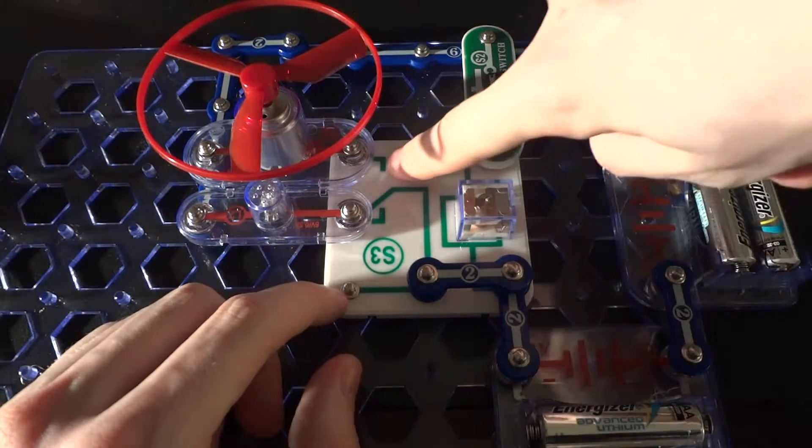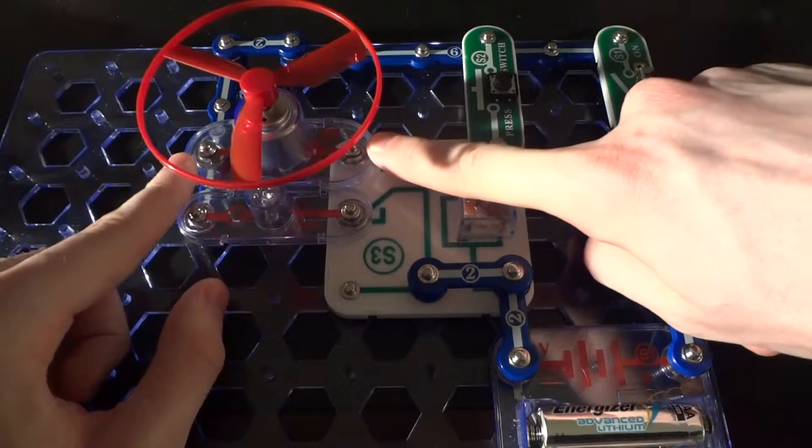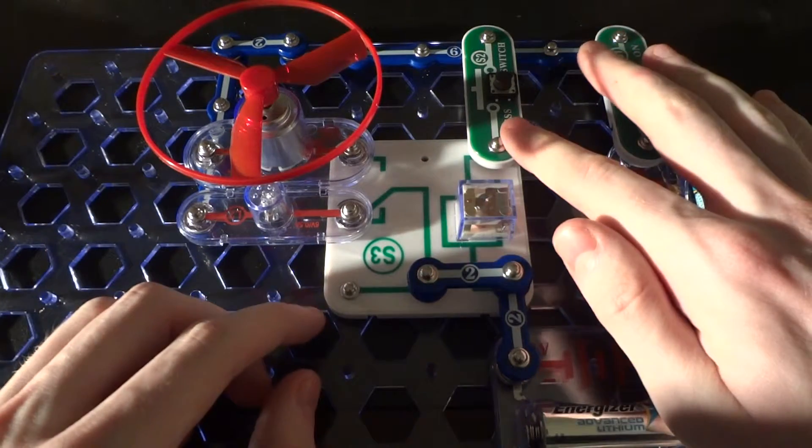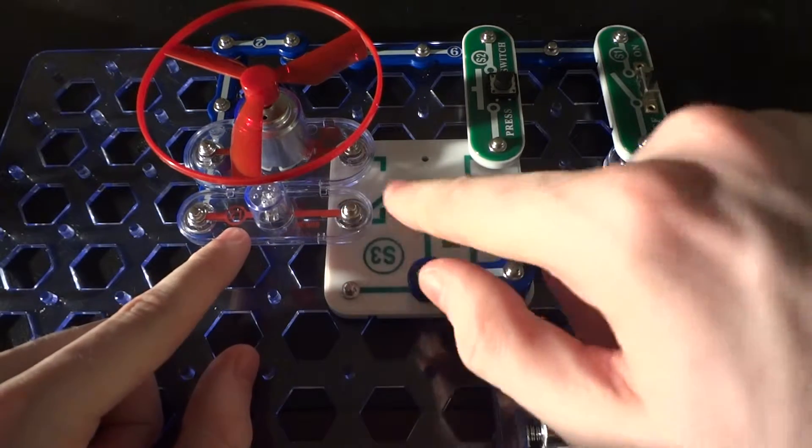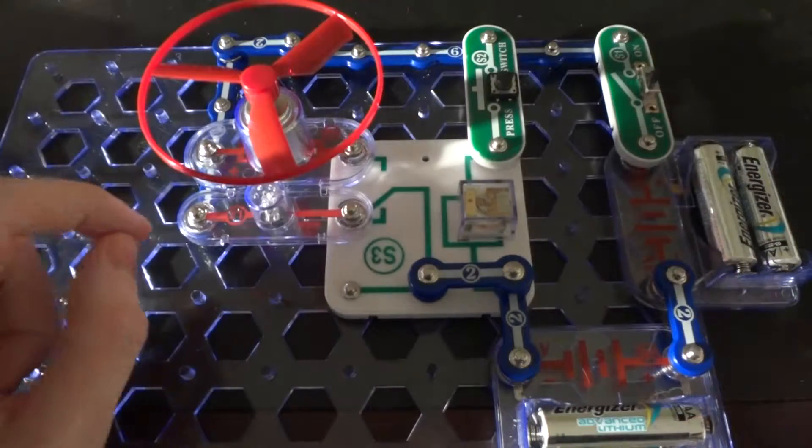Now this part here, this indicates that part of the circuit is normally open. When I activate the relay, this lamp will go out because this will become open and this will become closed, turning on the motor.